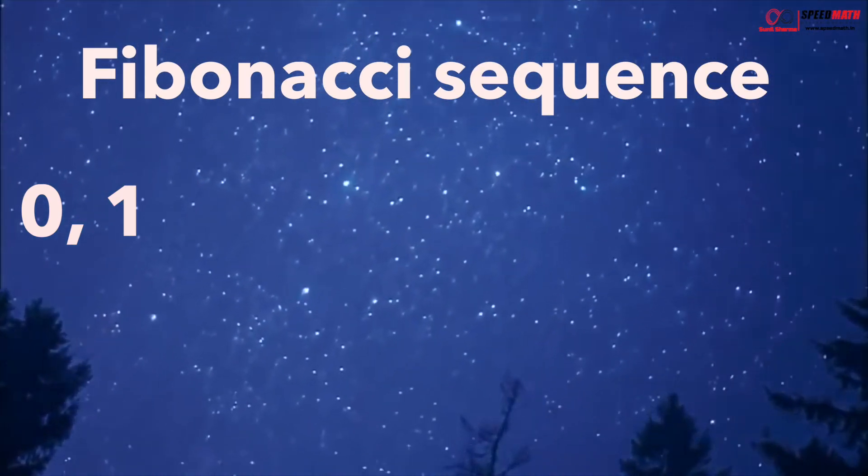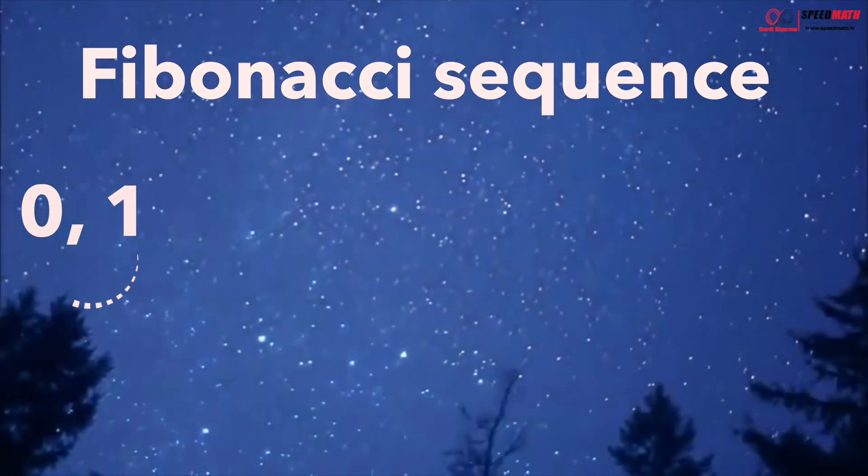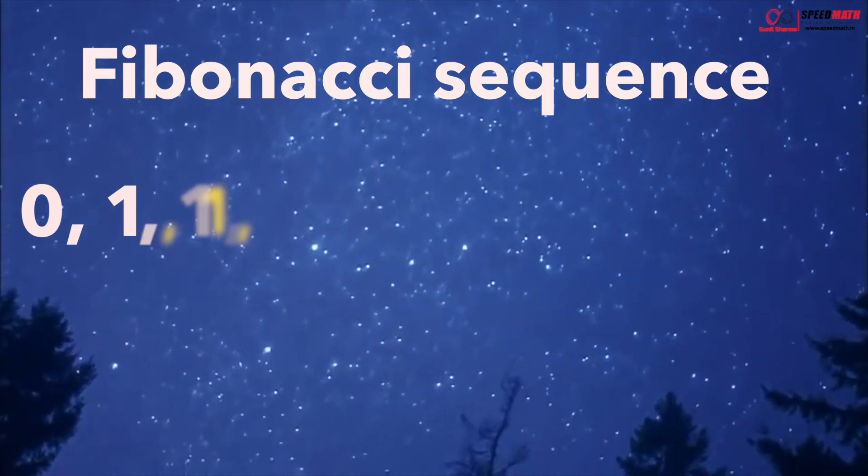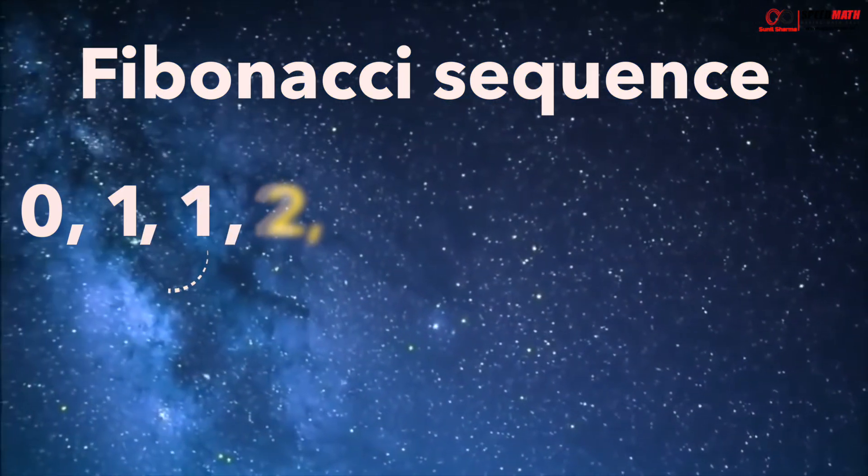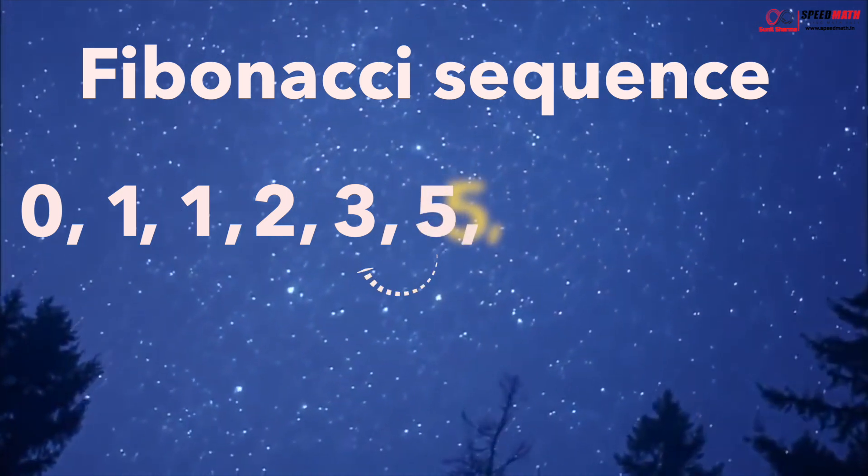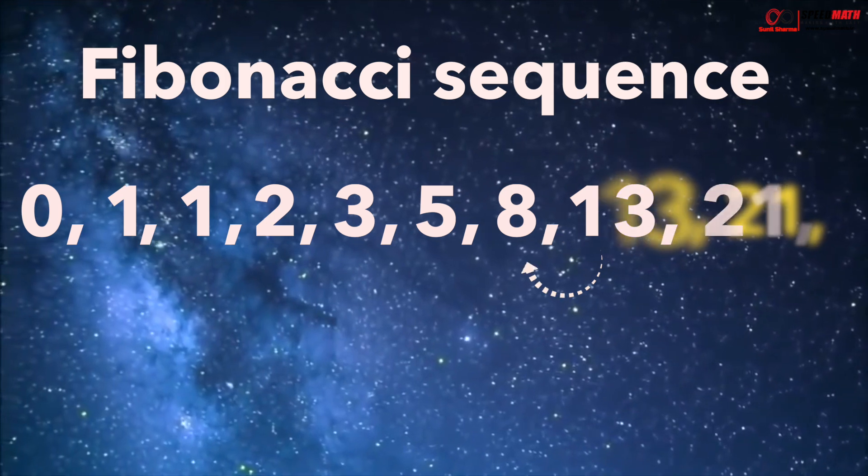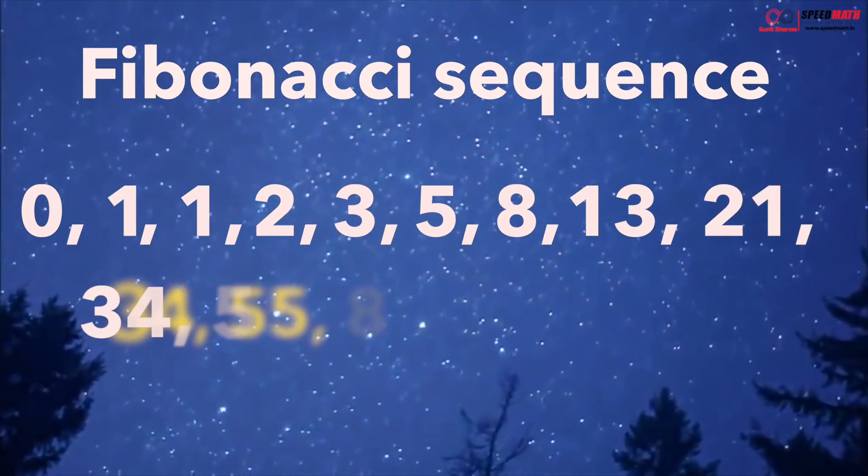This series starts with two numbers 0 and 1, and to get the next number we keep adding the previous two numbers. So if you add 0 and 1 you get 1, then if you add 1 and 1 you get 2, 1 and 2 gives you 3, 3 and 2 gives you 5, 5 and 3 gives you 8, 8 and 5 gives you 13, 13 and 8 gives you 21 and so on and so forth.